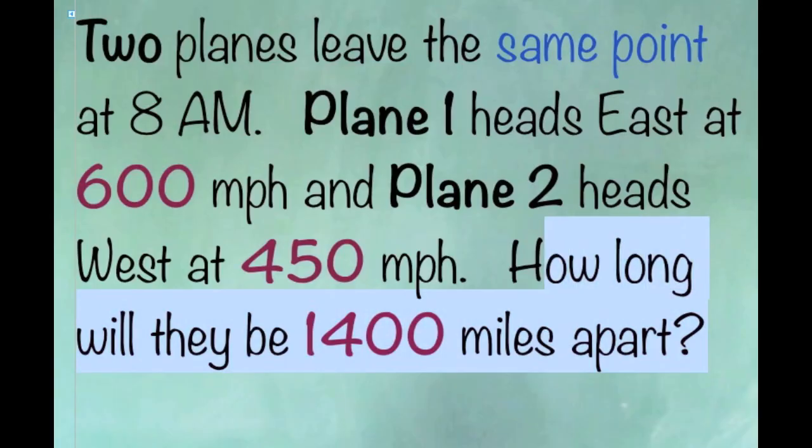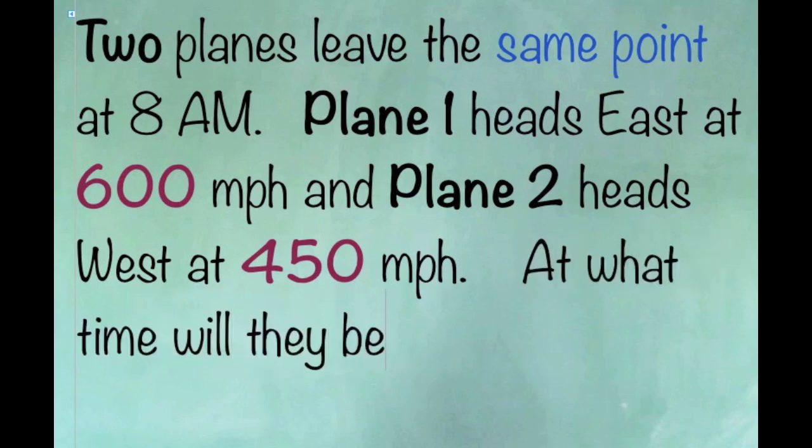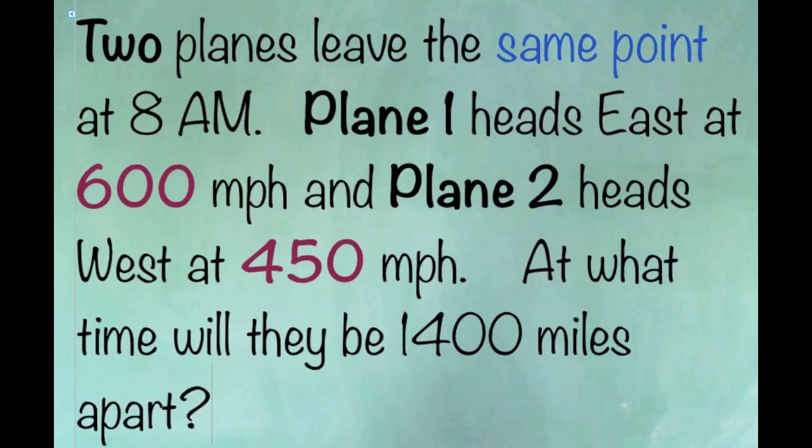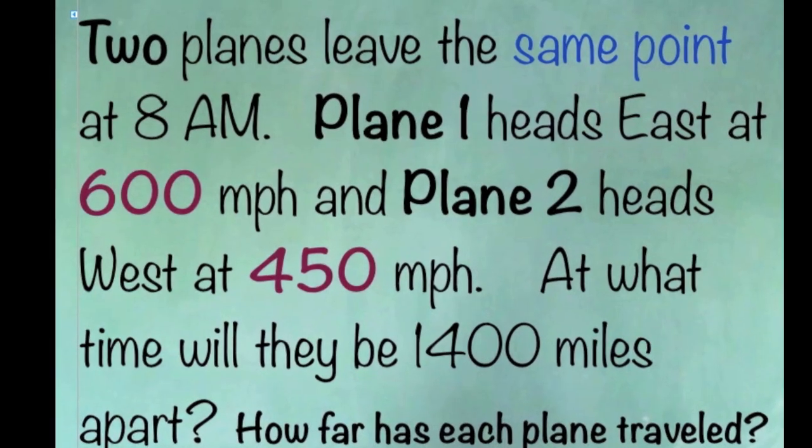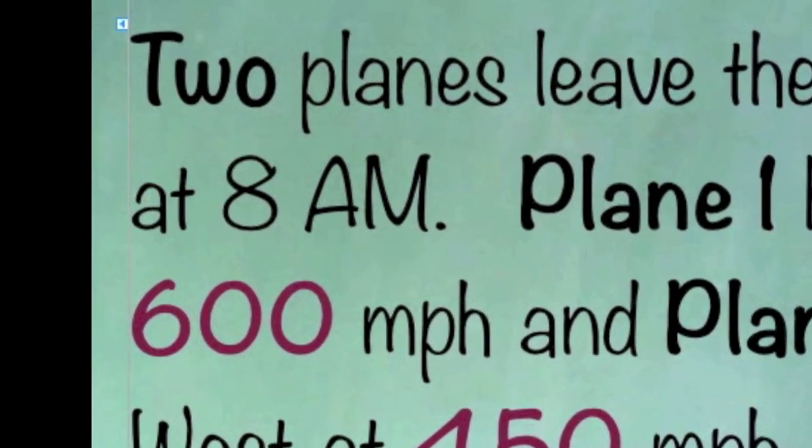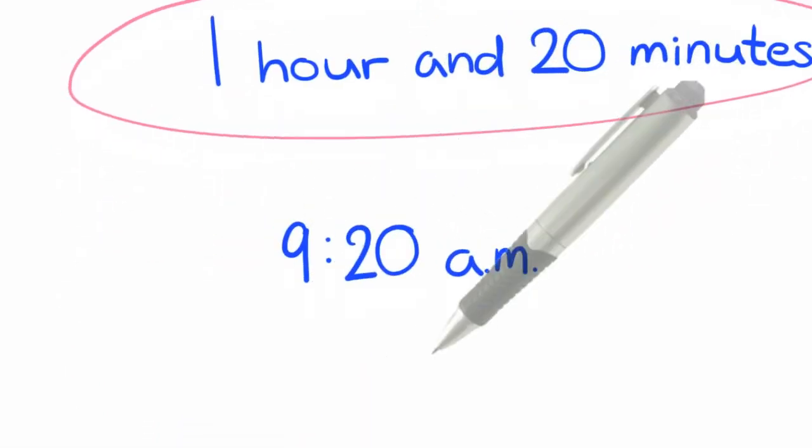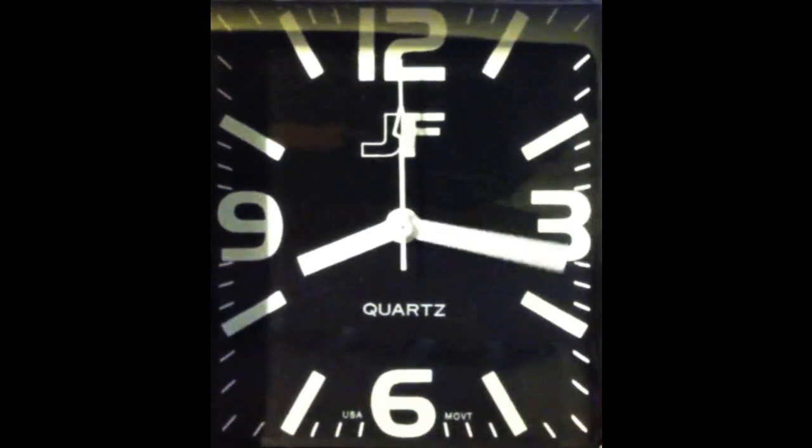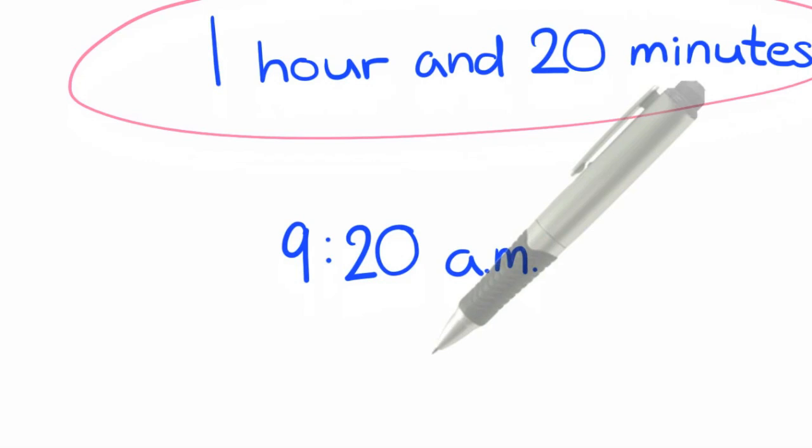Now let's modify the question and even extend it. At what time will they be 1,400 miles apart? And how far has each plane traveled? For the first question, we know they left at 8 a.m. We just have to add 1 hour and 20 minutes to it. 9:20 a.m. is the time.